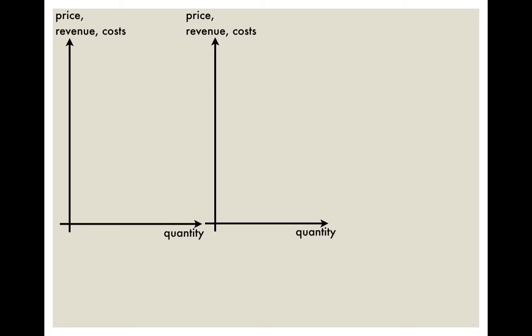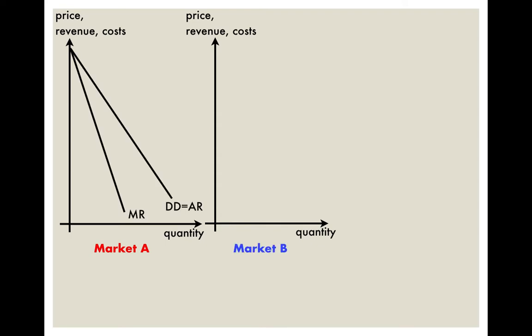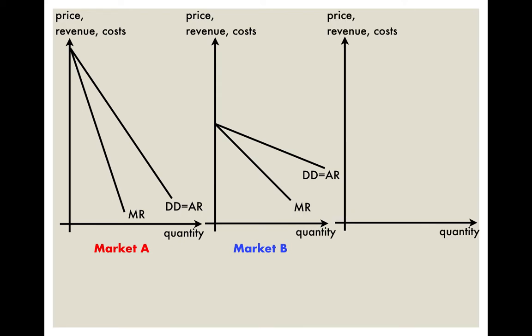For third-degree price discrimination, there are usually two or more groups of consumers in two or more markets. In market A versus market B, the demand in market A is relatively more price inelastic compared to market B. You can see the difference in price elasticity in terms of the slopes of the demand curves — in market A the demand curve is far steeper.